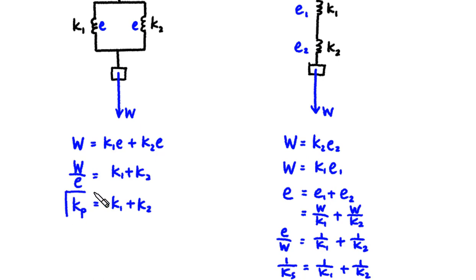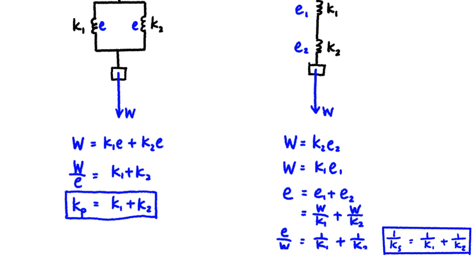If this reminds you of resistances connected in parallel and series, you are right — but the result is kind of opposite. When you connect springs in parallel, you get a larger spring constant. When you connect springs in series, you get a smaller spring constant. Amazing!